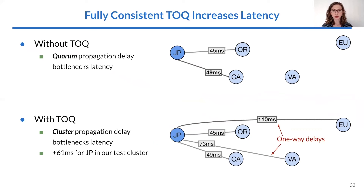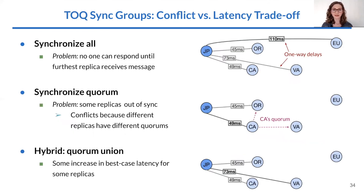Unfortunately, the most consistent version of TALK increases best-case latency. Without TALK, we only have to wait for responses from nodes in the quorum; with TALK, we have to wait for all nodes to receive the message, which increases best-case operation latency — in the example, TALK added 61 milliseconds. We considered alternatives: syncing only to the quorum adds no additional latency but reopens opportunities for conflict. Our paper also describes a third option called quorum union, which provides a balance between latency and consistency.